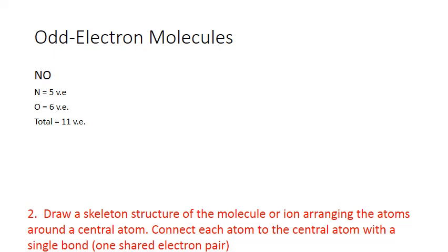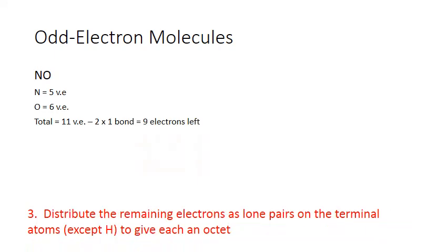Our next step is to draw a skeleton structure of the molecule. There are only two atoms here, so this is pretty easy — nitrogen and oxygen connected by a single bond, one shared pair between them. We subtract that shared pair from our total, giving us eleven minus two, or nine electrons left to place as lone pairs.